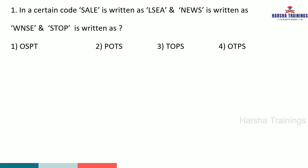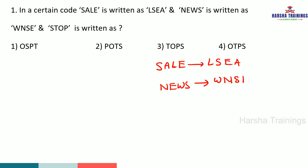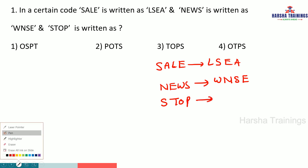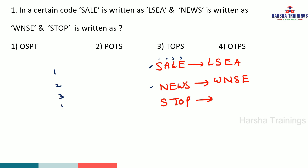Coming to model number one. The question is: in a certain code, SALE is written as LSEA, and NEWS is written as WNSE. Now logically, when we find out the pattern — check the problem immediately. SALE is written as LSEA, and NEWS is written as WNSE.